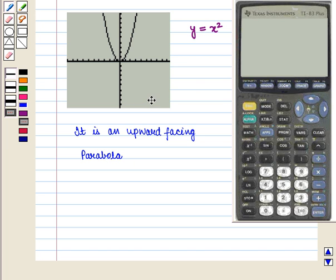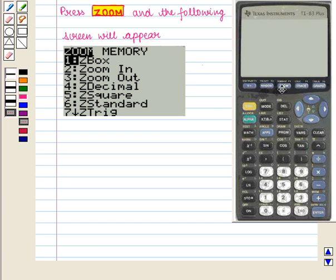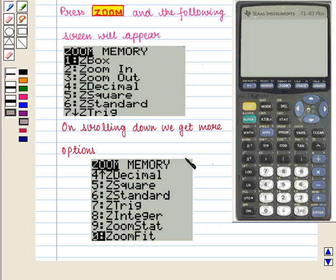We can get a better picture of the graph by using zoom settle. We press the zoom key and the following screen will appear. On scrolling down, we get more options.